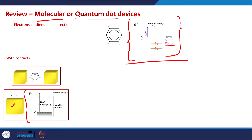This metallic bulk contact has a continuum of energy states, as we can see in this picture. The states up to the Fermi level of the system are completely filled, and the states above the Fermi level are completely empty. So there is this manifold of states — a continuum — filled up to EF and empty above EF.